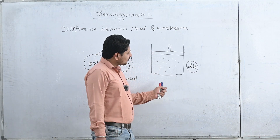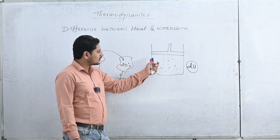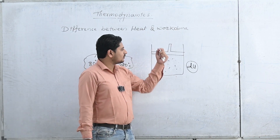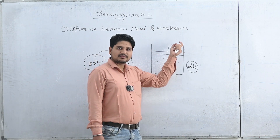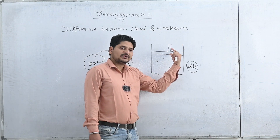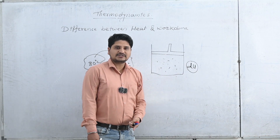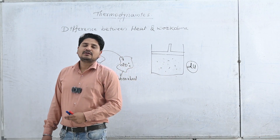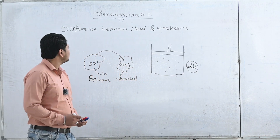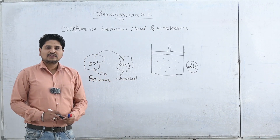So the internal energy can be changed in two ways: first, by supplying an amount of heat Q; and second, by doing work — applying the piston from the bottom or top changes the internal energy. This is the difference between heat and work done.